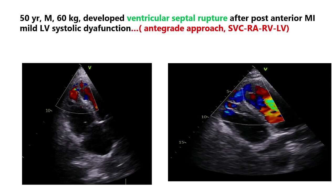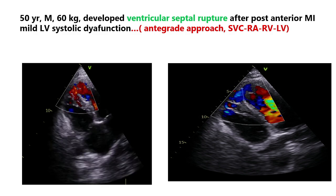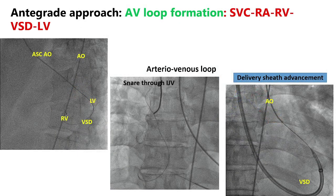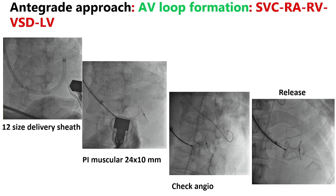This is another adult case, 15 years old, who developed a ventricular septal rupture following a post-MI event. We closed this through the SVC-to-RV antegrade approach, crossing the VSD via SVC, and deployed a 24×10 PI muscular device.